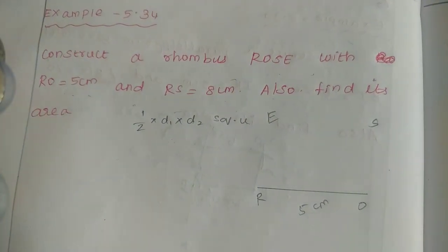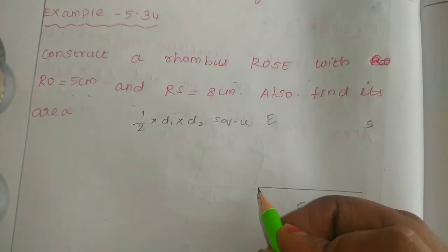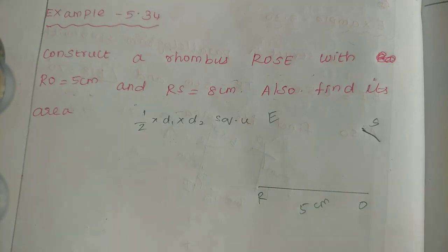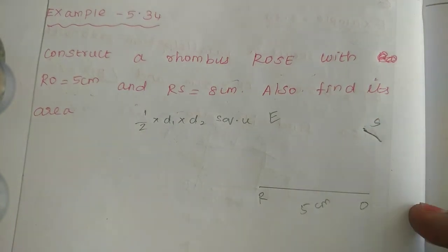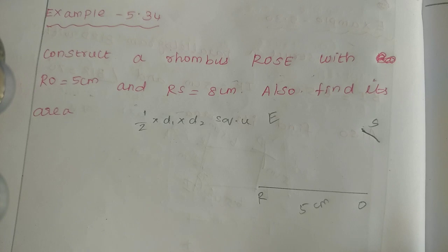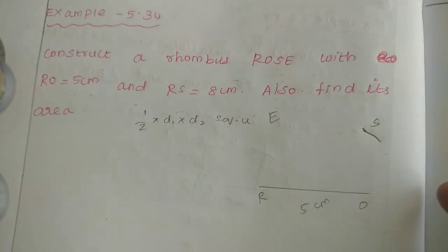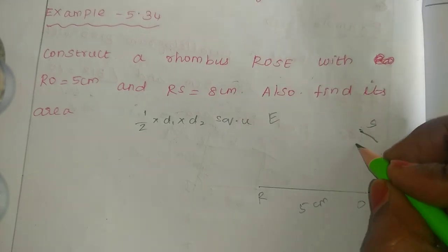RS is 8cm. So RO is 8cm. I told you that the sides are equal. So the sides are equal. This is diagonal. The sides are 5.